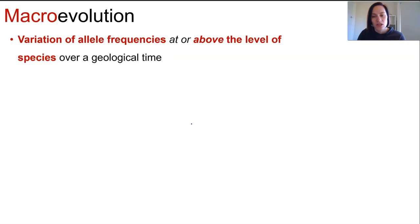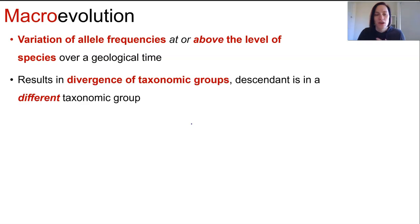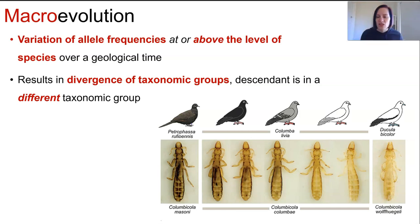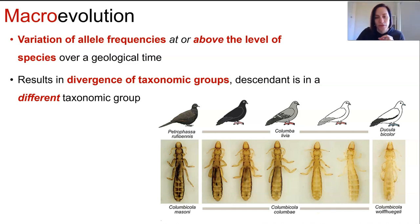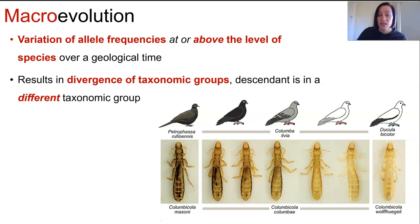When enough of these traits accumulate it can lead to the formation of a new species — that's where macroevolution comes in. Macroevolution is the variation of allele frequency over geological time at the species level, resulting in a divergence of taxonomic groups in which the descendant is a different taxonomic group to the ancestor. So much change accrues over such a large timescale — in genotype or phenotype — that a new species or genus can arise, known as divergence. Microevolution and macroevolution are fundamentally the same process, just on very different timescales.